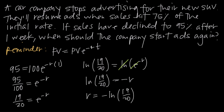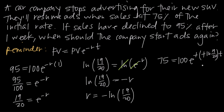Now that we have a value for r, we can plug it in and find the time t when the company should expect to reach 75% of initial sales. Starting with the formula again: present value of sales is 100, the future value we're interested in is 75, because we want the point when sales hit 75% of their initial rate. So 75 equals 100 times e to the negative r — where r is negative natural log of 19 over 20 — multiplied by t. The two negatives cancel to a positive, so dividing both sides by 100 gives 75 over 100 equals e to the natural log of 19 over 20, multiplied by t.